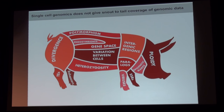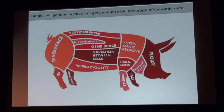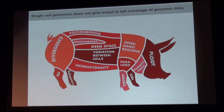However, single cell genomics does not give snout-to-tail coverage of genome data. In the culinary world there's a big emphasis on using the whole animal, and as genomicists we've sometimes been wasteful — sequencing a genome, pulling out the microsatellites, and throwing the rest away. We don't have that privilege with single cell genomics; we're just getting some prime cuts and the rest is inaccessible. Ideally we want to get at the gene space — what types of genes are found in this genome and what can that tell us about metabolic potential.